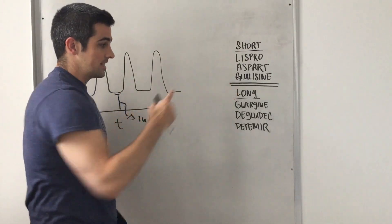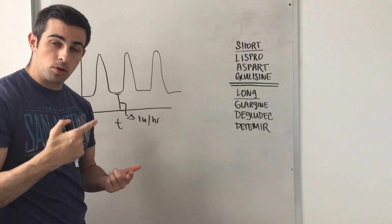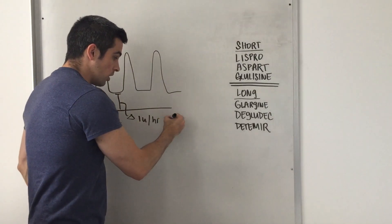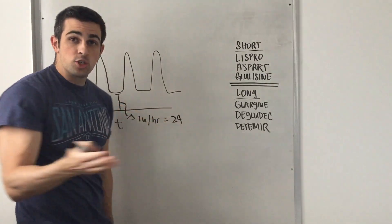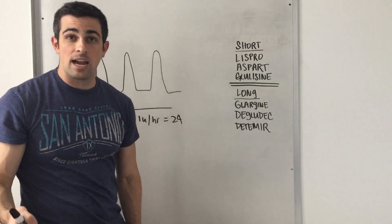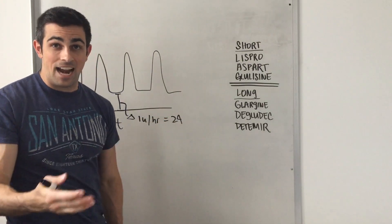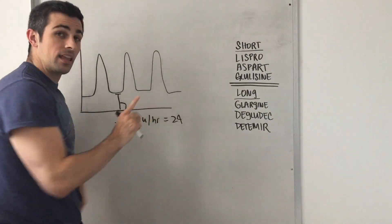Or 24 units of it in general. So glargine 24 units is a perfectly fine basal dose to give at nine o'clock at night. Step one.